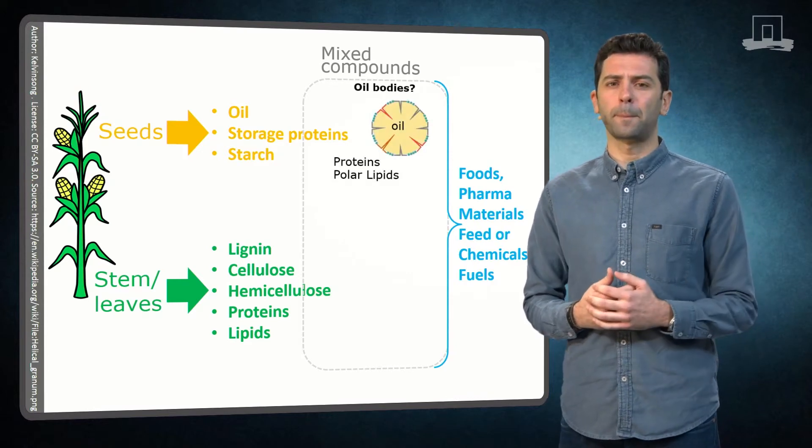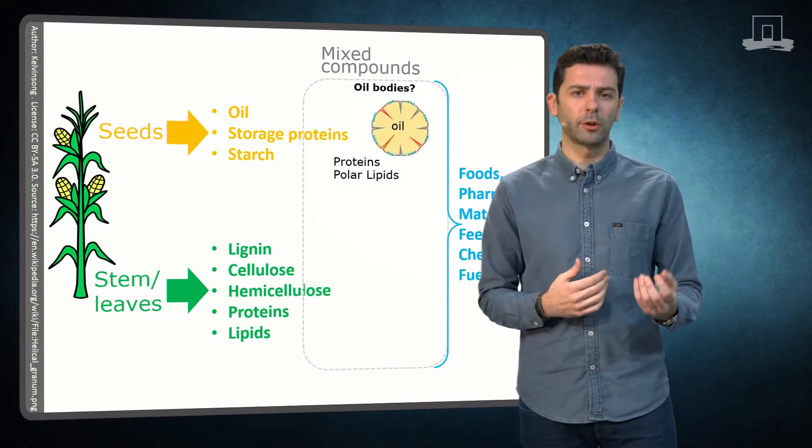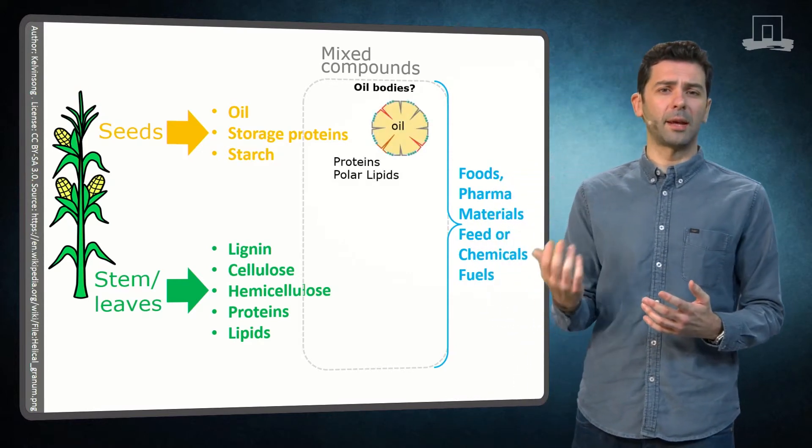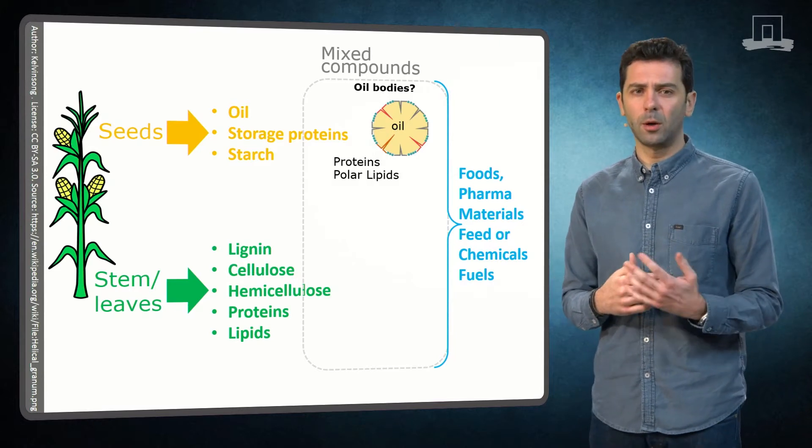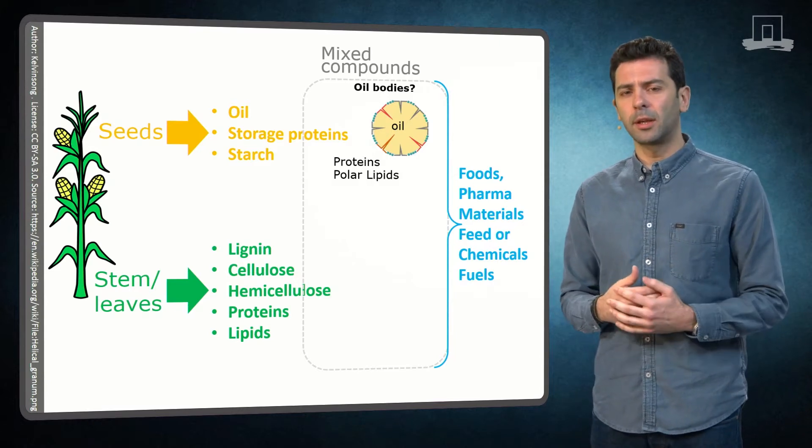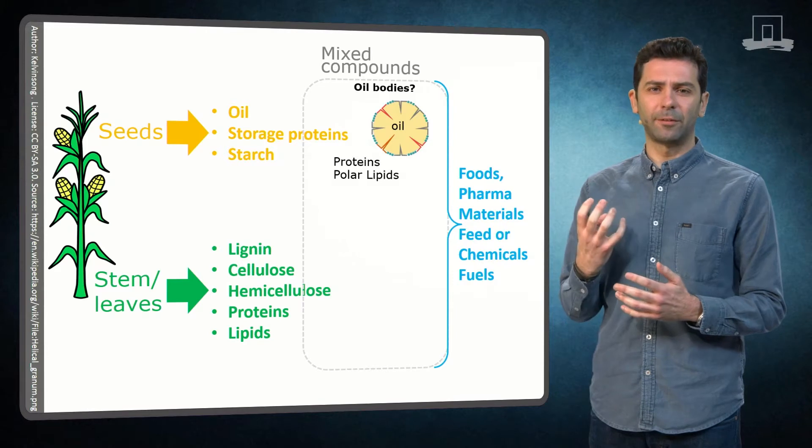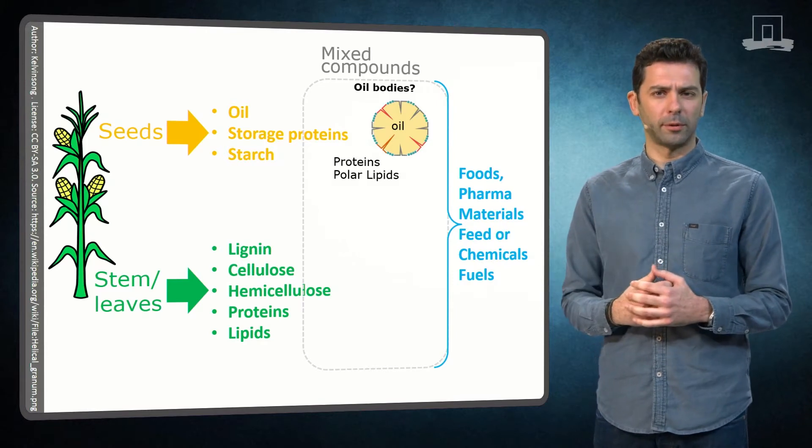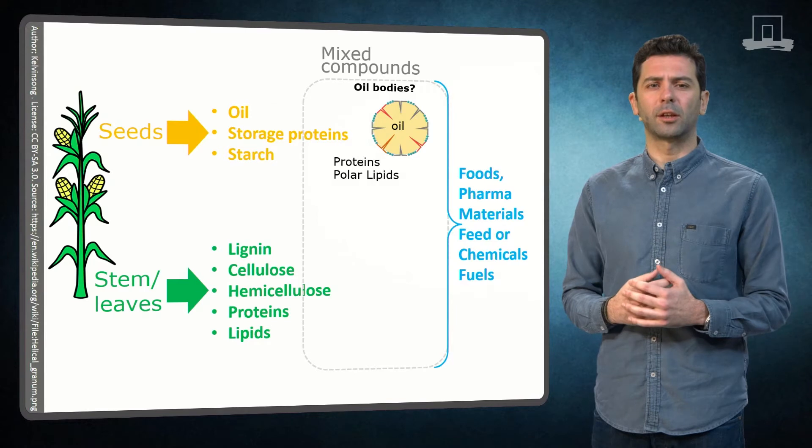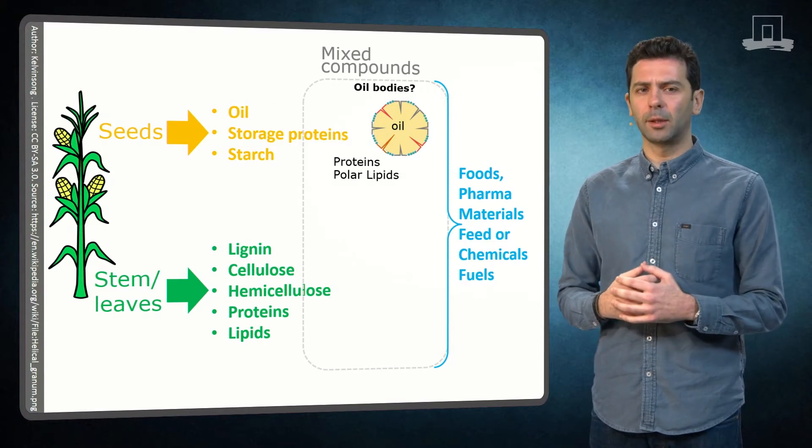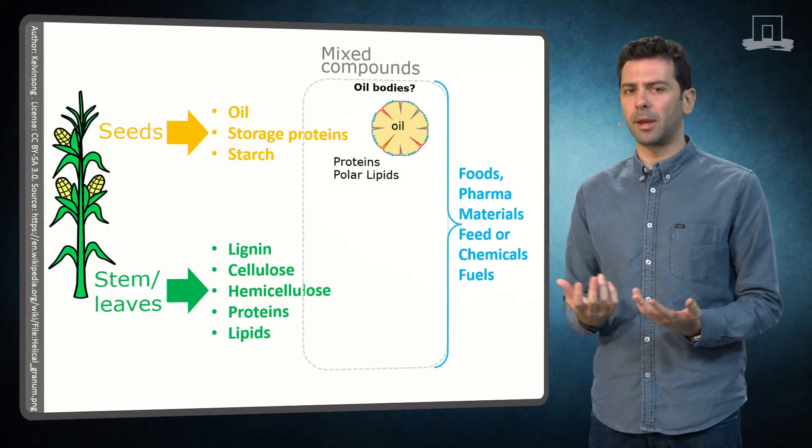For example, instead of using toxic organic solvents or high temperature pressing to extract the oil, we could aqueously separate the oil in its native form, the so-called oil bodies. Oil bodies are tiny spheres that contain all the oil protected by protein lipid membrane.